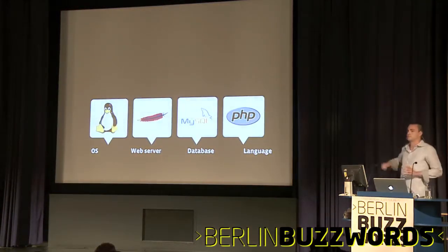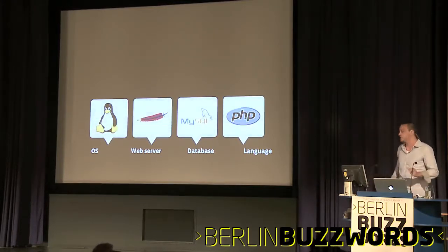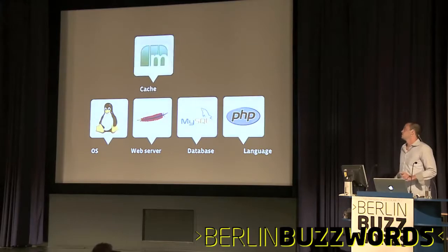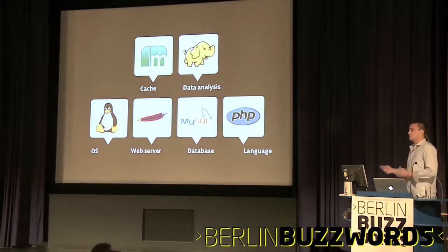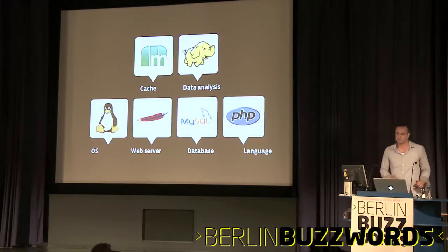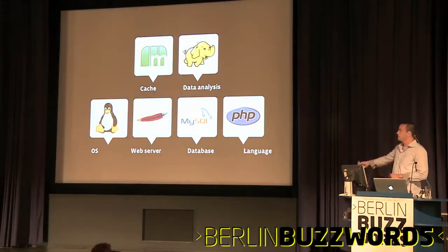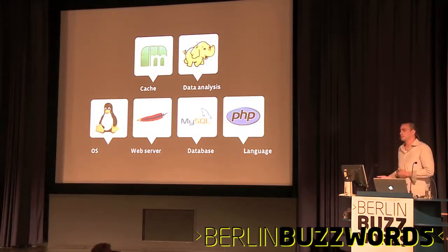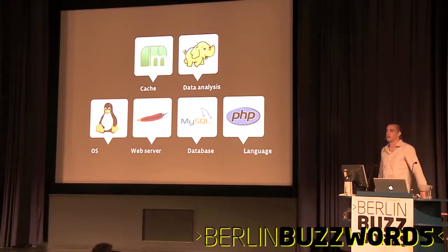What you see here is what Facebook is, was, and will be for a long time — it's the LAMP stack: Linux, Apache, MySQL, PHP. There are some changes: first we added memcache, just an in-memory key-value store for high throughput. And also Hadoop for offline data analysis. PHP and Apache have actually been replaced by something called HipHop, which is a PHP to C++ compiler, and we deploy those binaries across our web tier now.